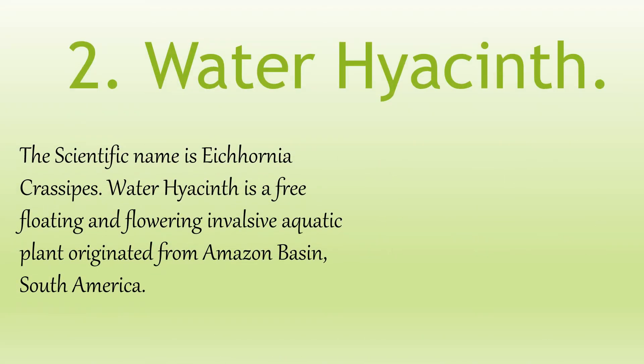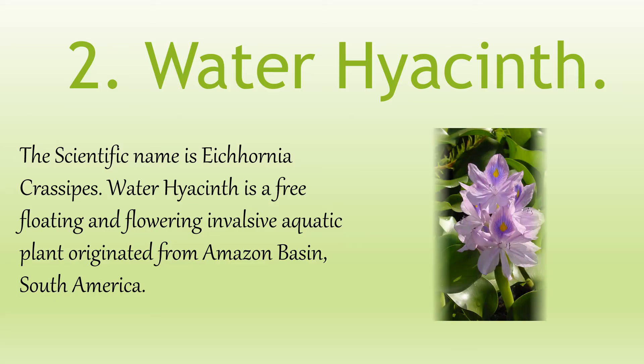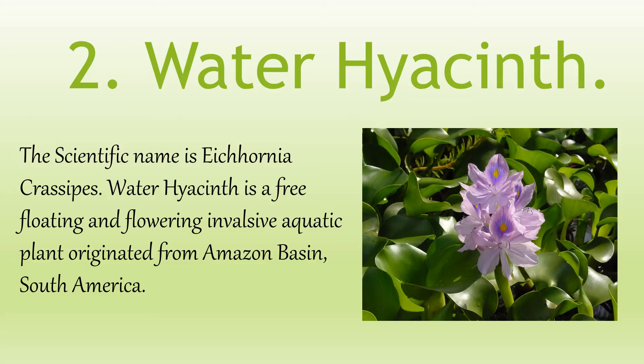Water Hyacinth. The scientific name is Eichhornia crassipes. Water hyacinth is a free-floating and flowering invasive aquatic plant originating from the Amazon Basin, South America.